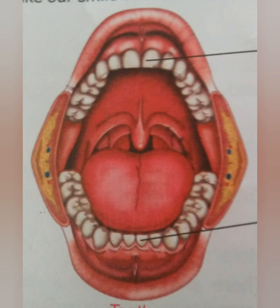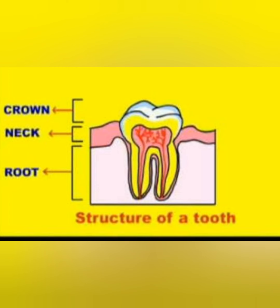The next topic is structure of teeth. A tooth has three parts. The first part is called the crown, the second is the neck, and the third is the root. The outer layer is very hard and is called enamel.